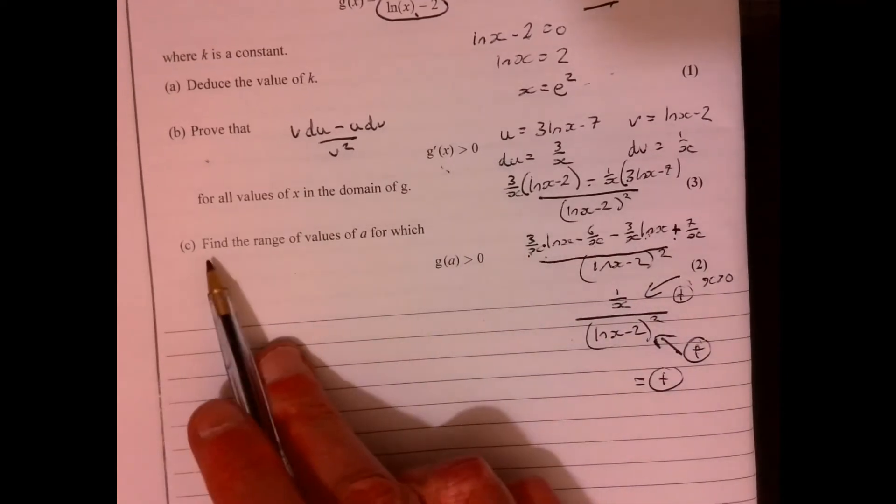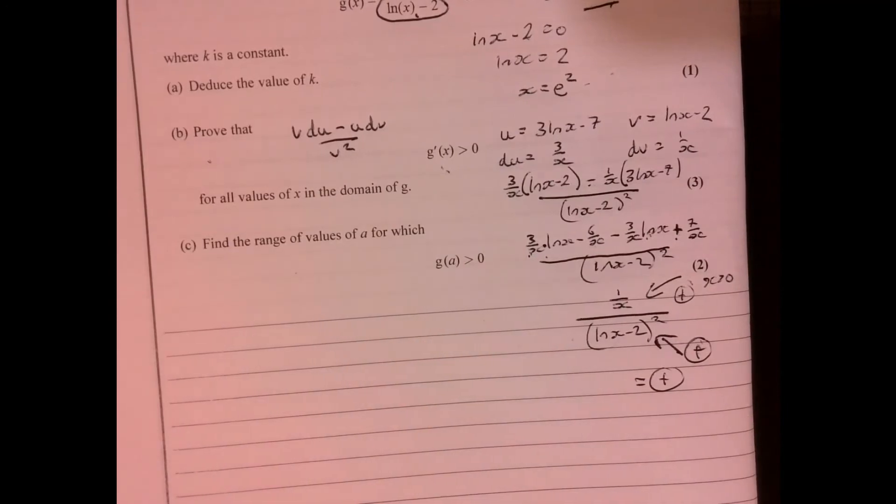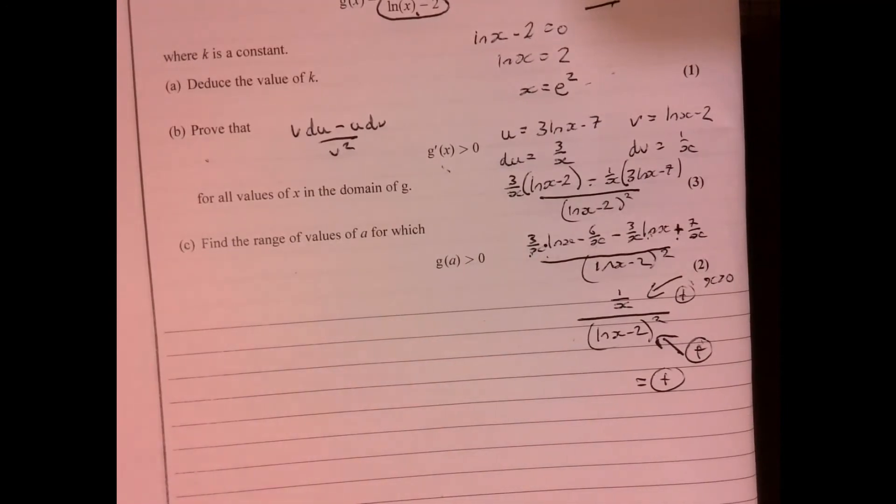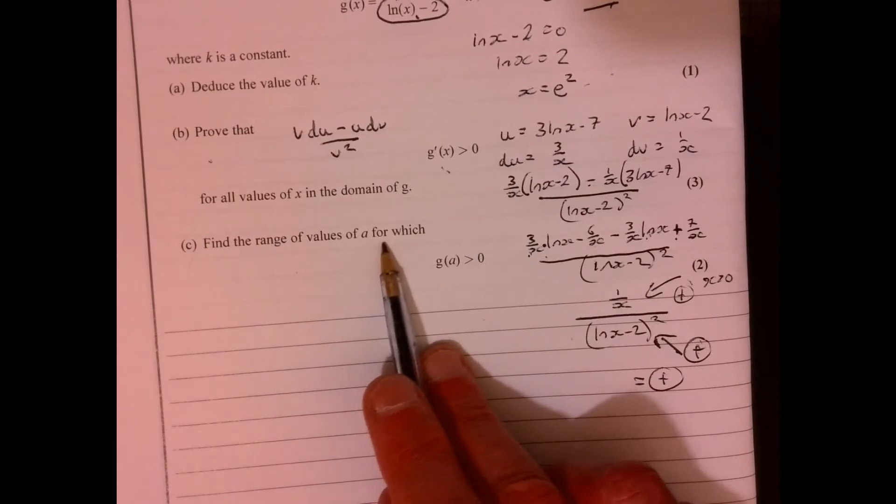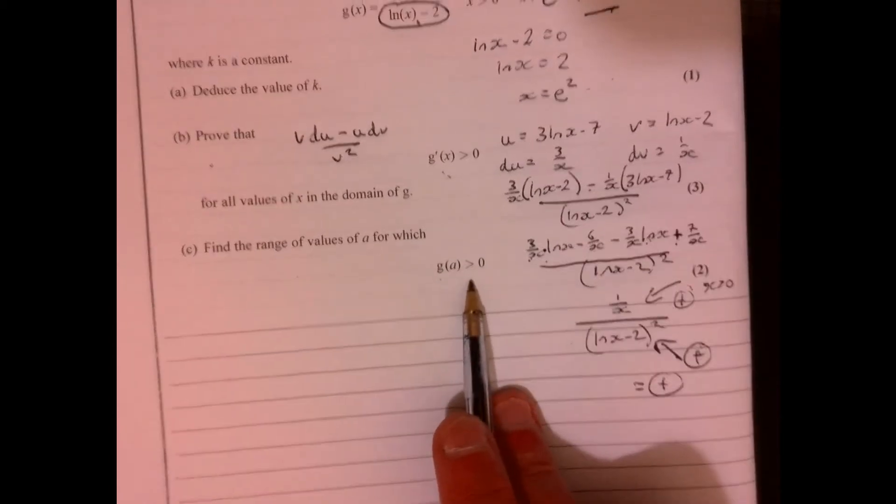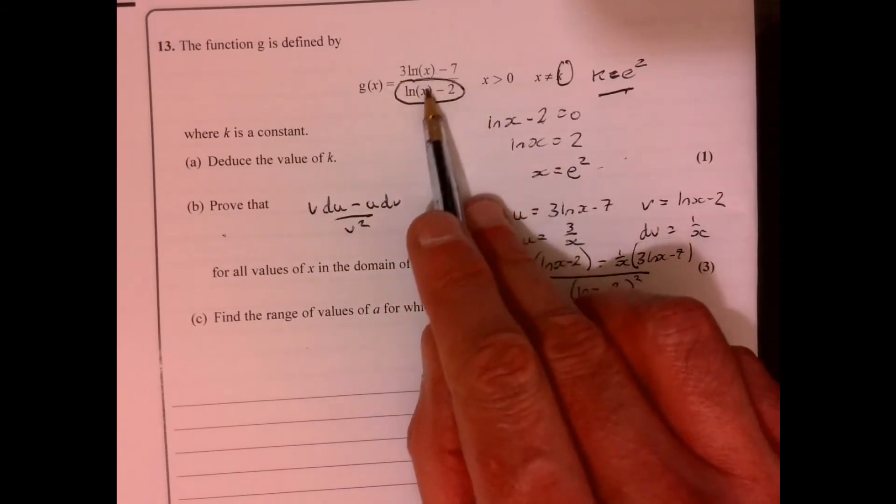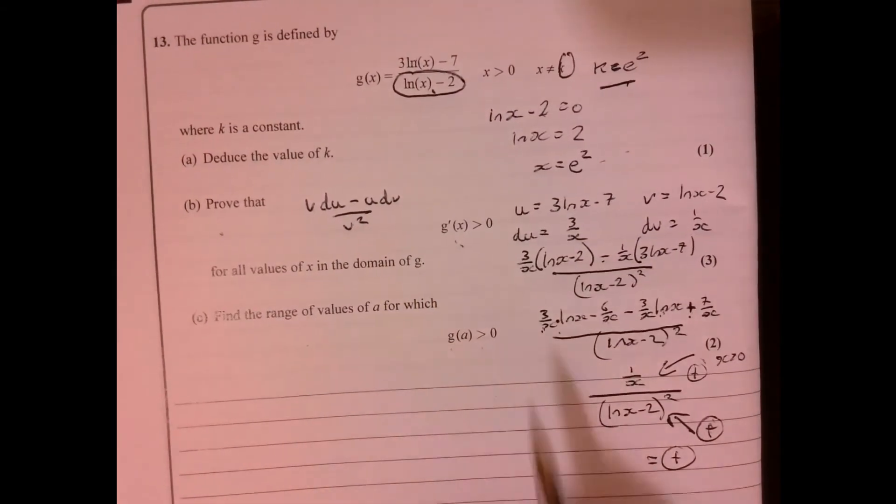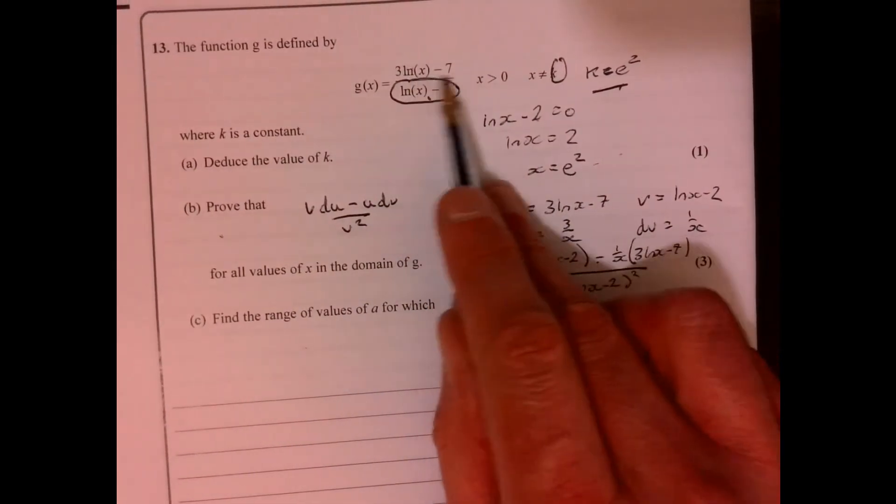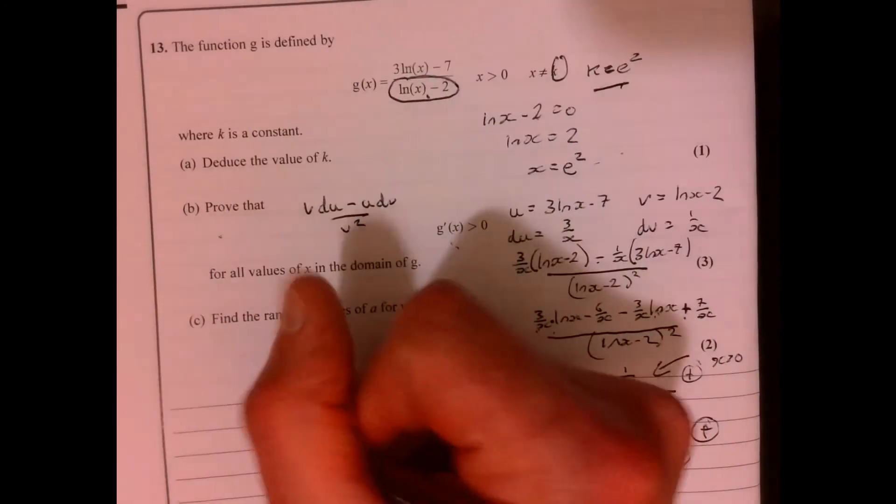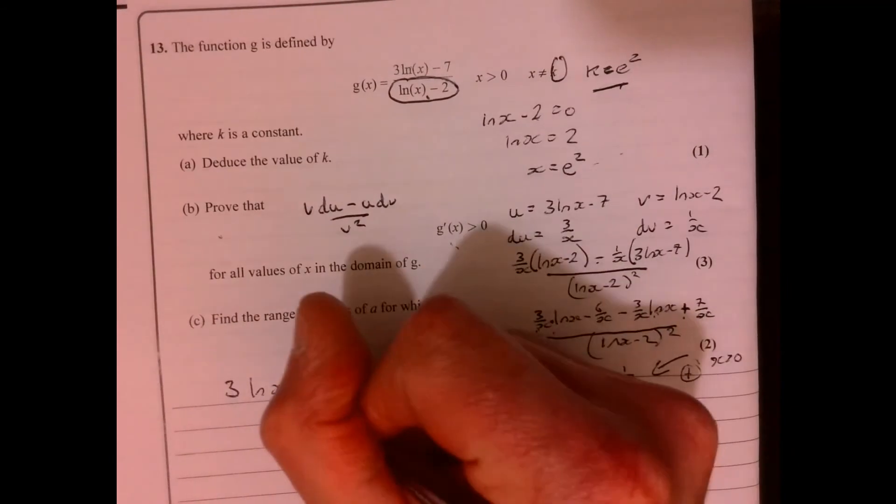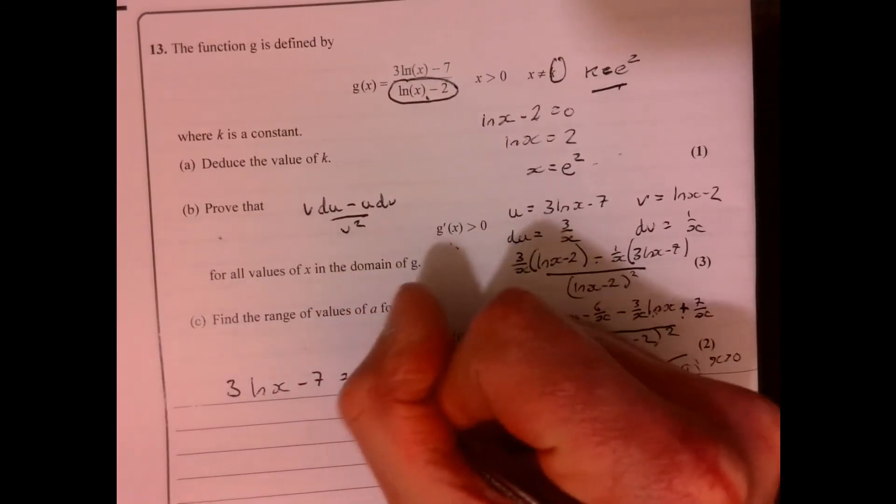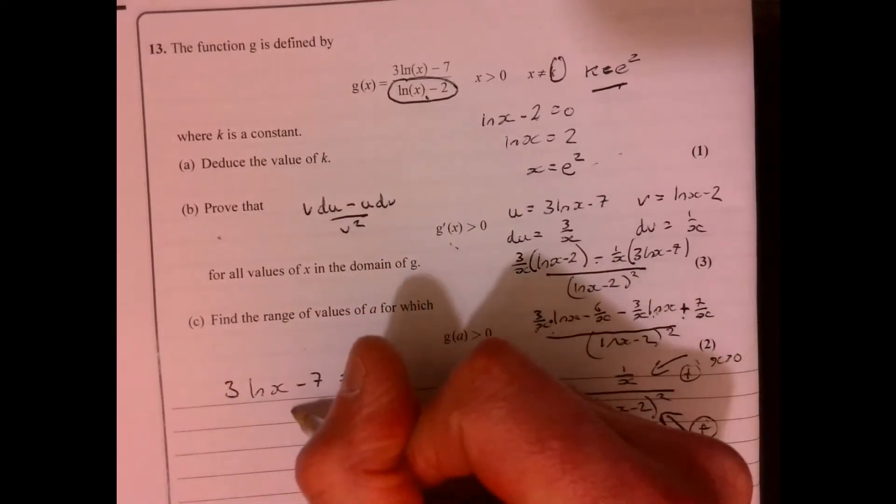Right, now let's have a look at part C. So find the range of values of A for when this is going to be more than 0. Well, first of all, let's think about the numerator. Let's think when it is equal to 0. So add 7 divided by 3, equals 7 over 3.